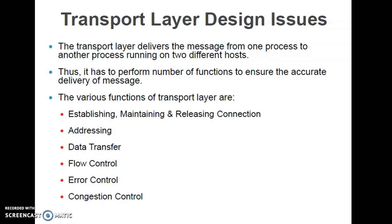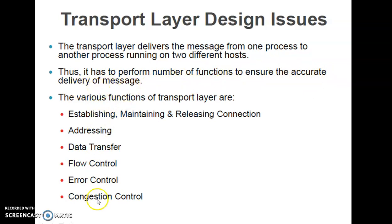Now we'll understand transport layer design issues. The transport layer delivers messages from one process to another process running on two different hosts, so it must perform a number of functions to ensure accurate message delivery. Satisfying or achieving these functions is what we call transport layer design issues.